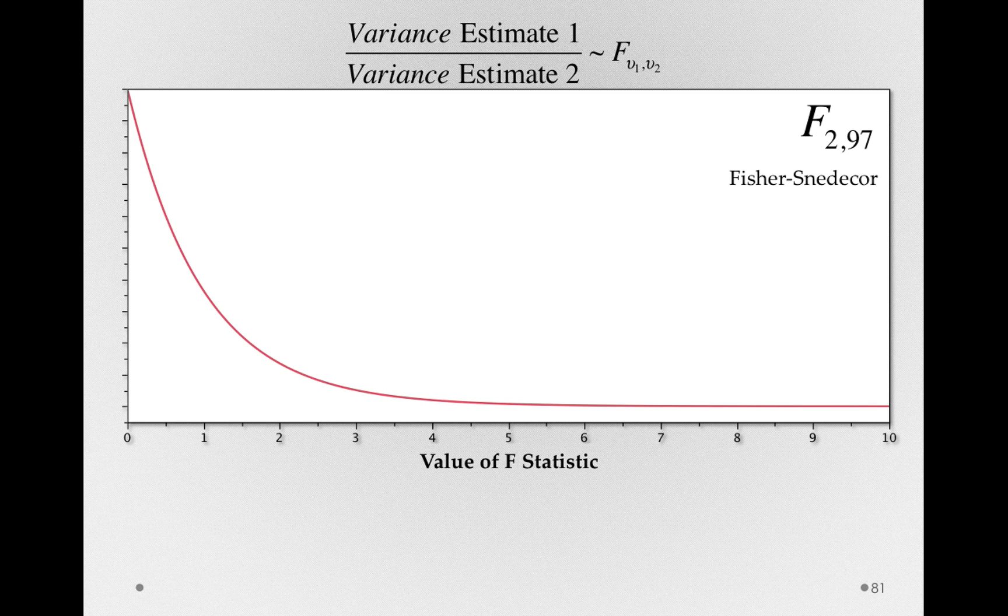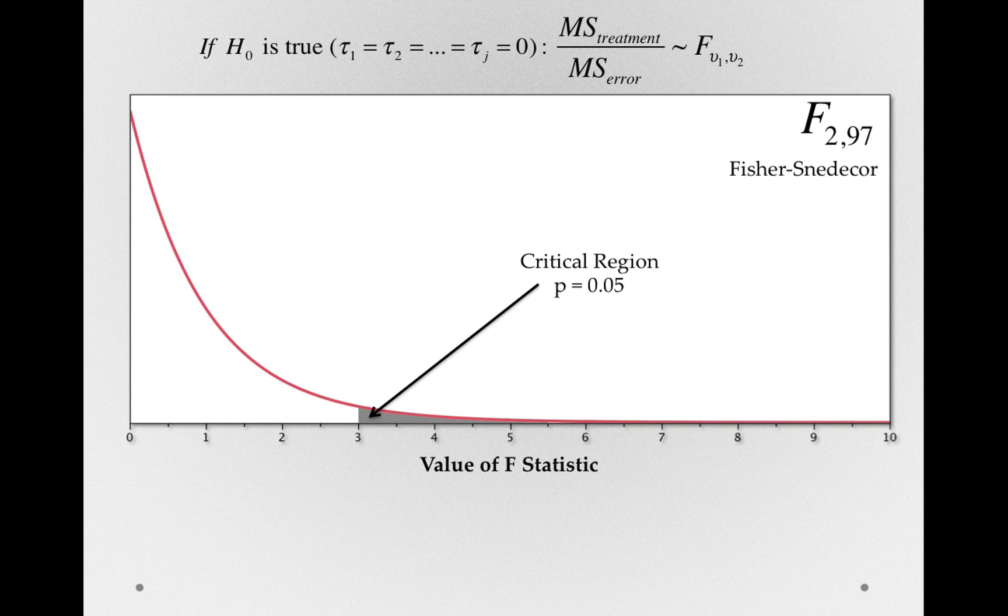Which means we can designate an area, a critical region, equal to alpha like we've done before. And if the null hypothesis is true, these would be unlikely values of f to get. But if the null hypothesis is false, and that mean square for treatment is actually larger, that is, it has systematic variance in addition to error variance, then we should expect larger values of f.